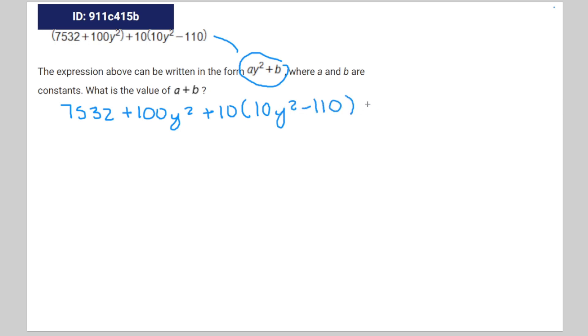is equal to ay squared plus b. Distribute this equation is going to be plus 100y squared minus 1,100.